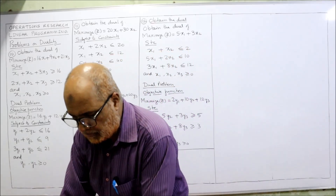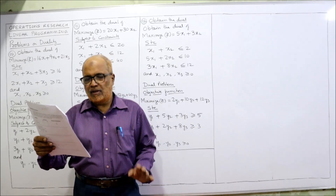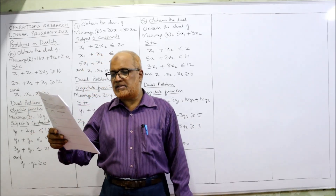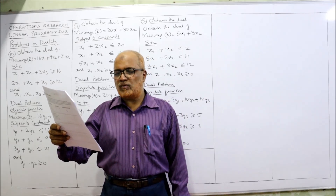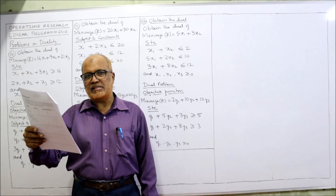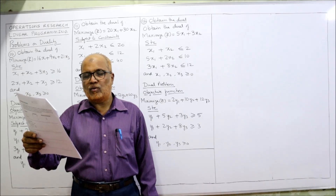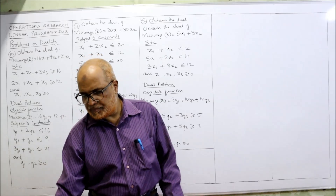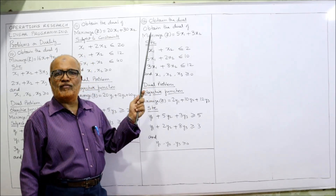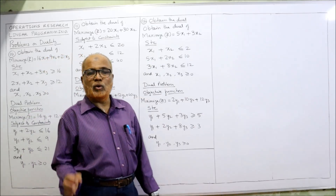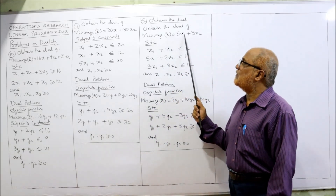One more problem to make the point even clearer — Problem 12: Obtain the dual of — Maximize Z = 5X1 + 3X2, subject to: X1 + X2 ≤ 2, 5X1 + 2X2 ≤ 10, 3X1 + 8X2 ≤ 12, with X1, X2, X3 ≥ 0. The original problem is maximization, so the dual will be minimization.